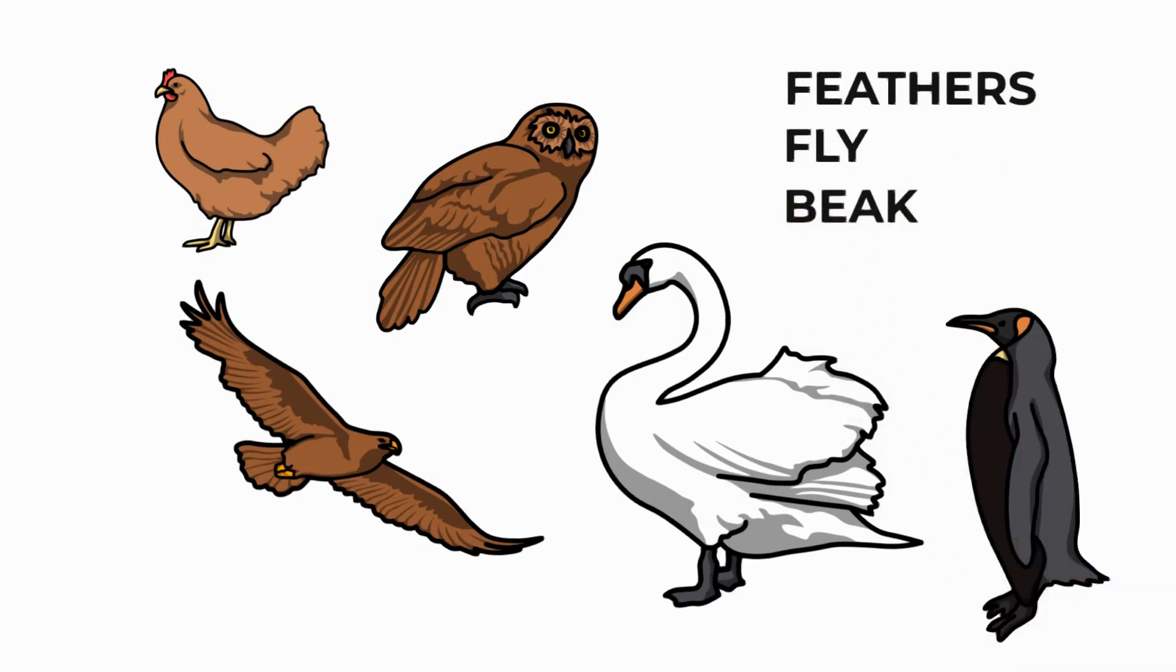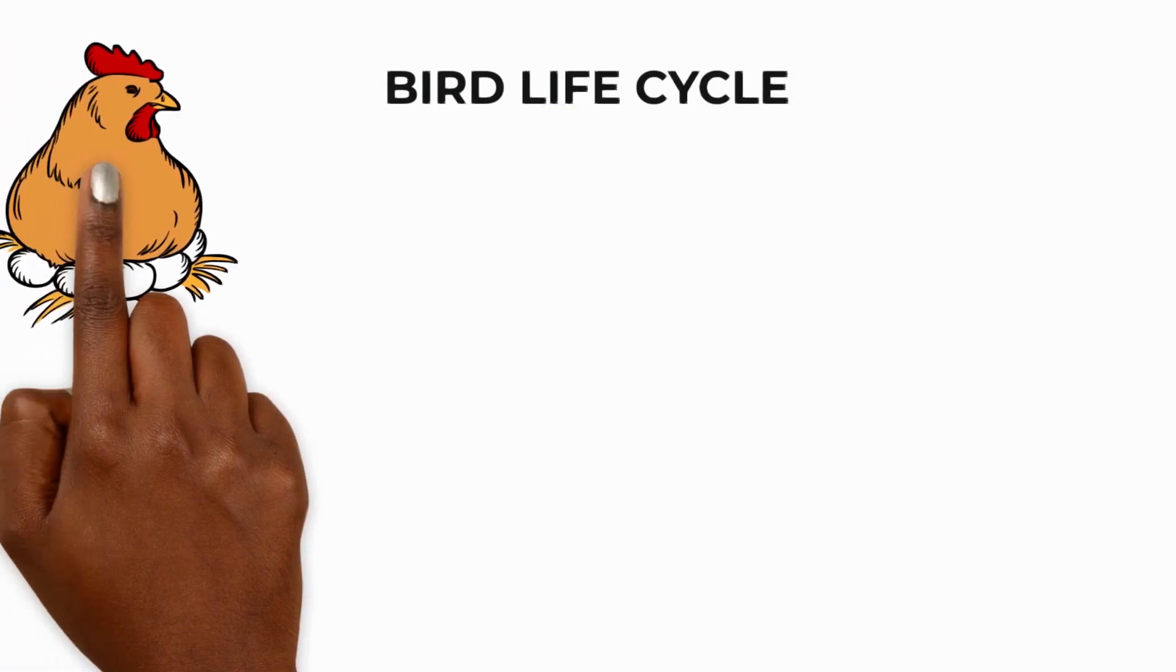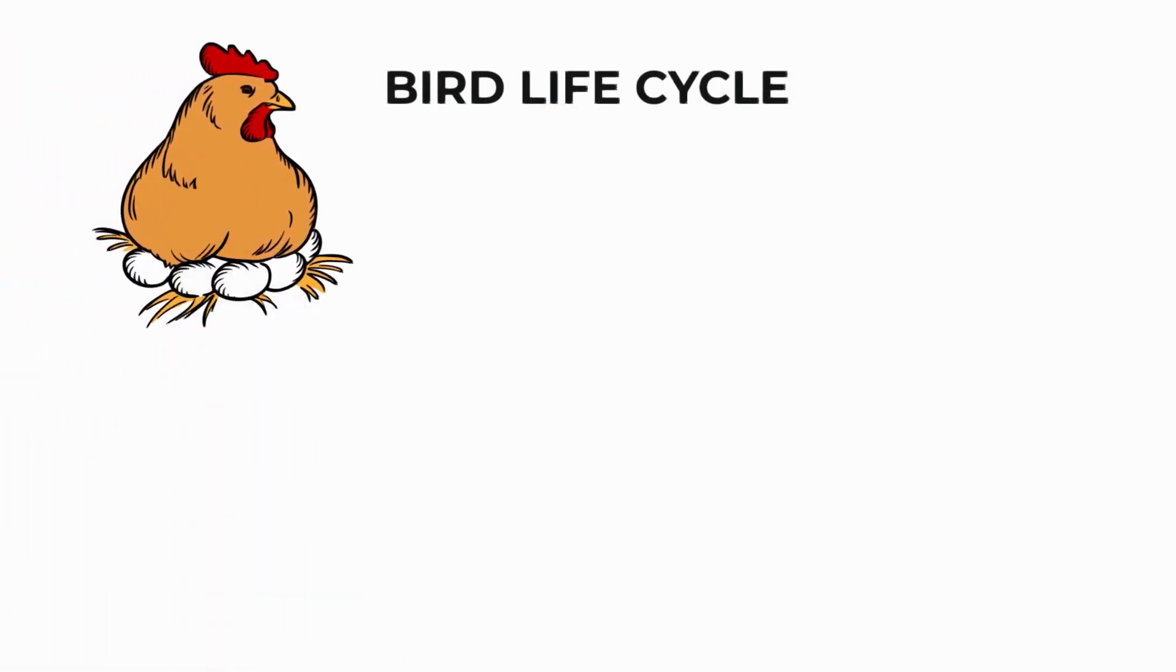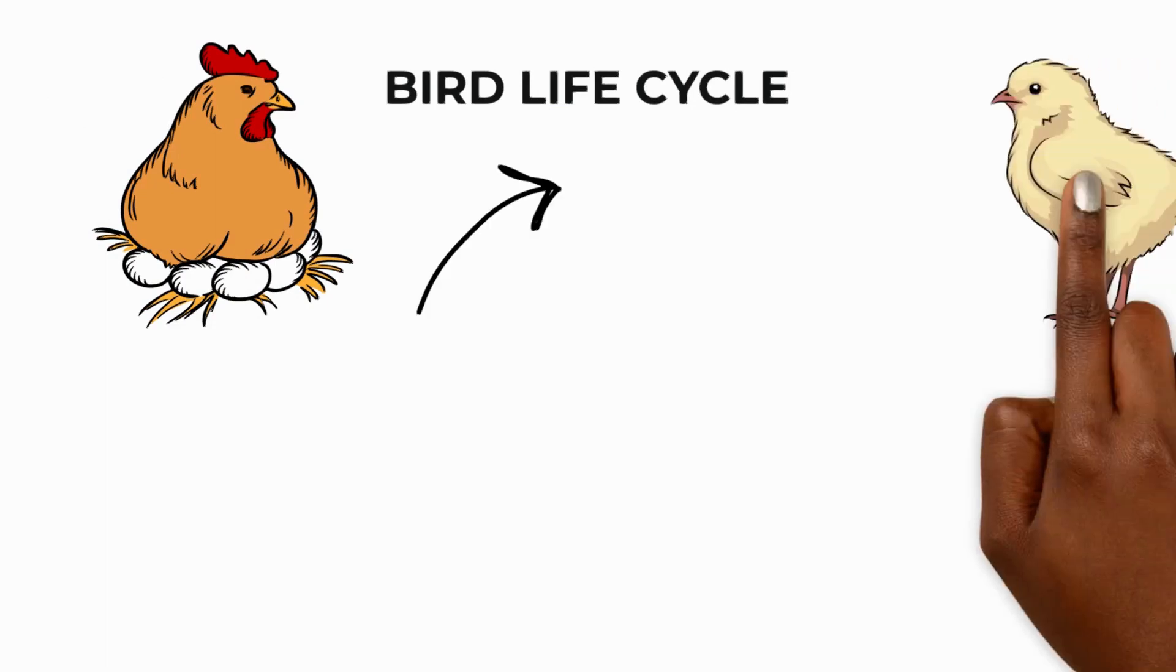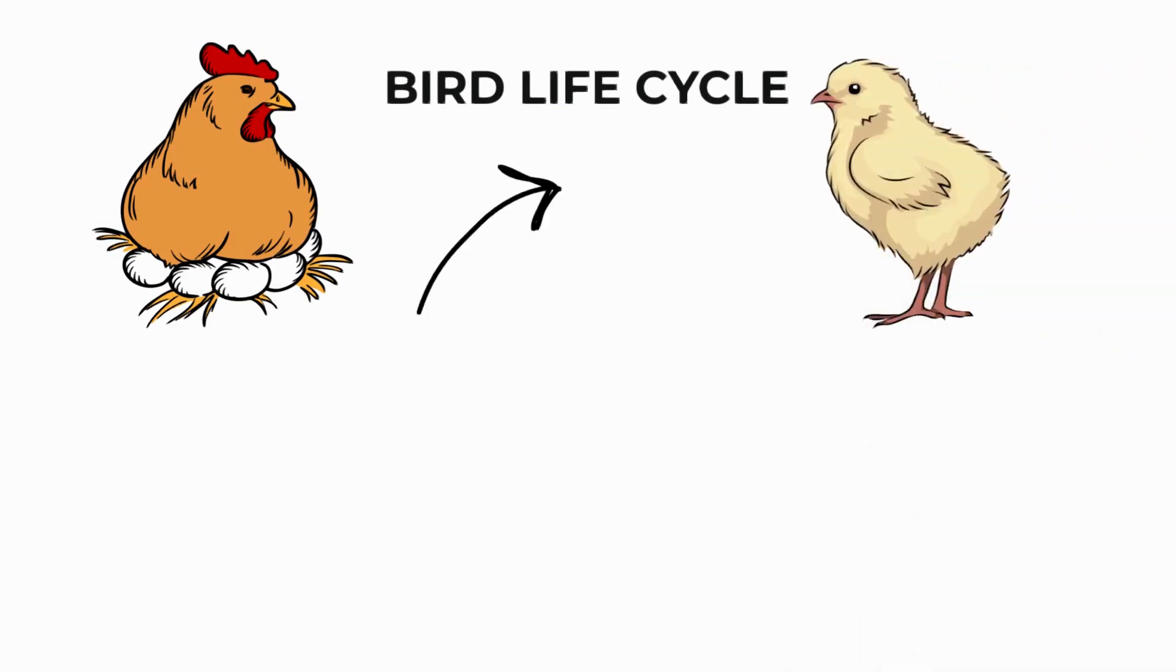The life cycle of a bird begins with an egg. The egg is incubated, usually by one or both parents, to keep it warm until it's ready to hatch. When a chick hatches, it's covered in soft, fluffy feathers called down.